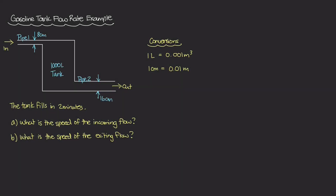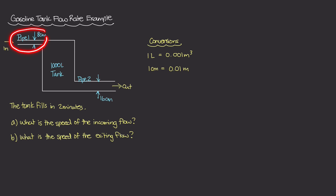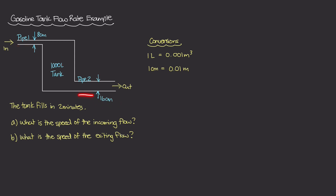In this example, I want to look at this gasoline tank flow rate problem. We have a 1000-liter tank — an empty tank that can hold 1000 liters of gasoline coming into it. At the top, we have an eight-centimeter diameter pipe, labeled pipe one, which is circular and where gasoline flows in. At the bottom, we have pipe two, which is 16 centimeters in diameter. Both are circular pipes, and pipe one is much smaller than pipe two.